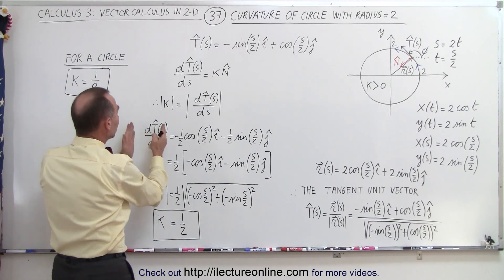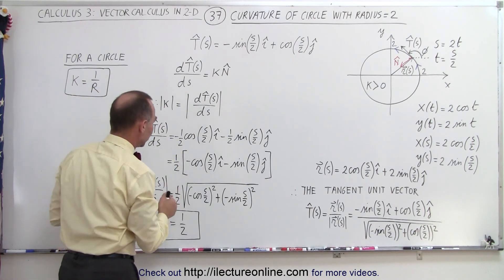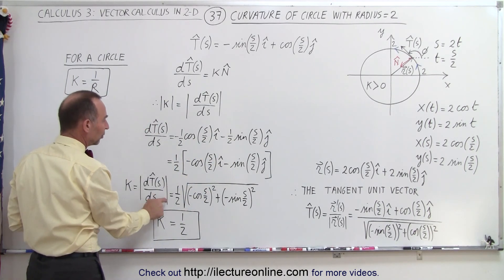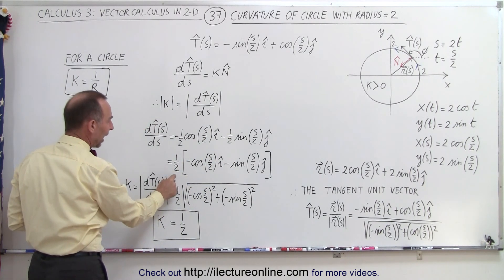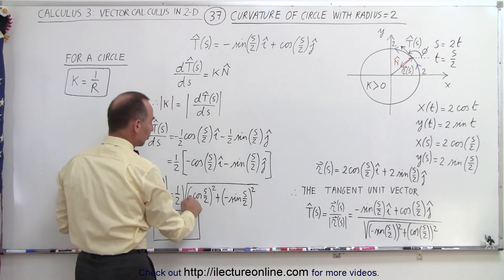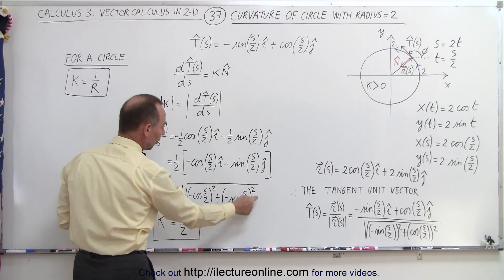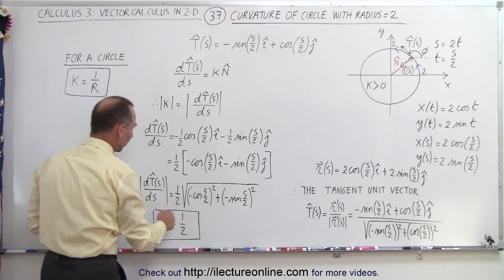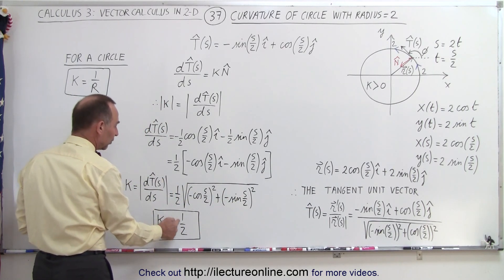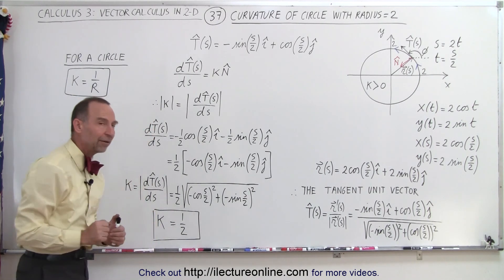Now we have the derivative of the unit tangent vector with respect to s, and its magnitude equals the magnitude of the curvature. We factor out 1/2 and take the magnitude, which is 1/2 times the square root of the sum of the squares of the components. That quantity equals 1, so therefore the magnitude of the curvature is equal to 1/2.